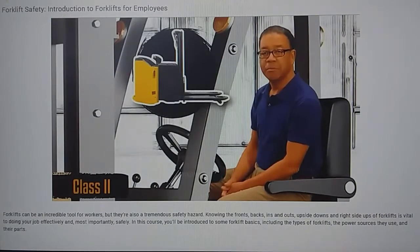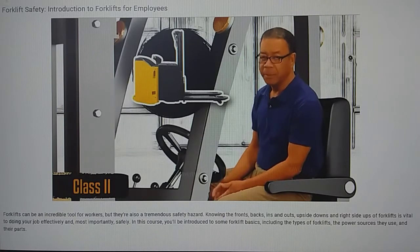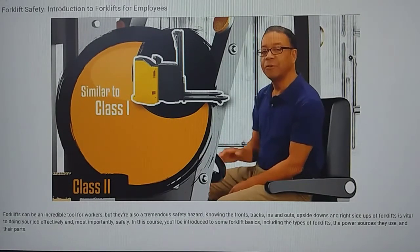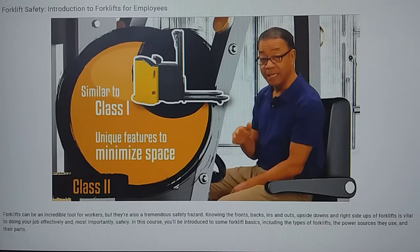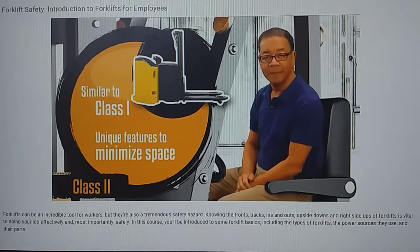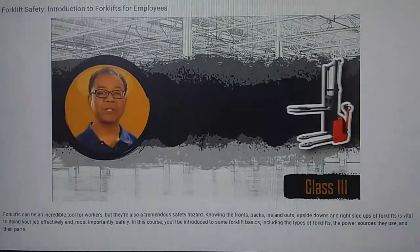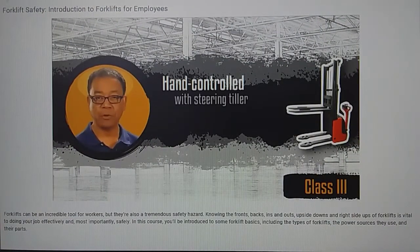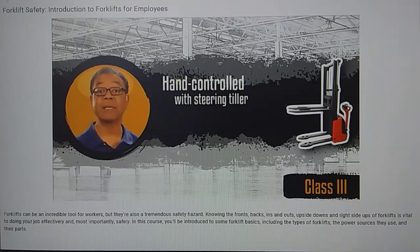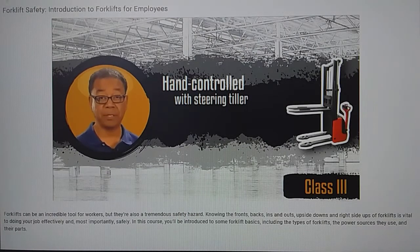Class 2, electric motor narrow aisle trucks are similar to Class 1 trucks, but they have unique features that allow them to minimize the space they take up in order to improve speed and efficiency in tighter spaces. Class 3, electric motor hand or hand rider trucks are hand controlled by an operator in the front of the truck via a steering tiller. All controls are mounted on the top of the tiller, which is moved side to side to steer.